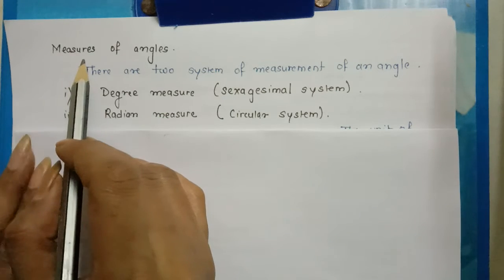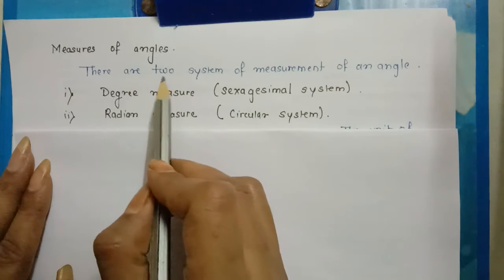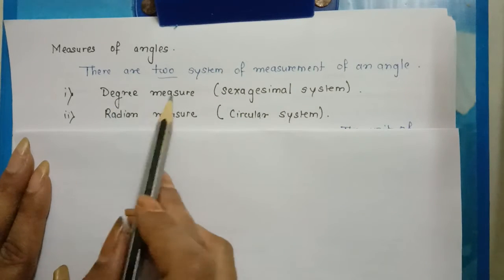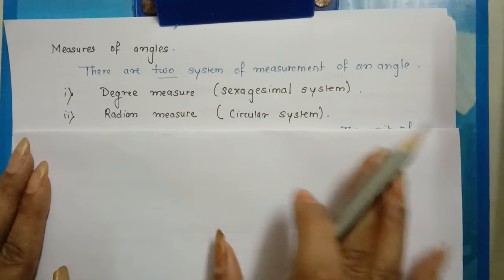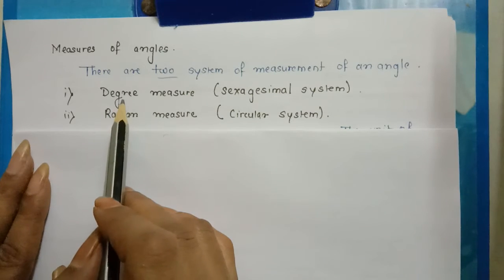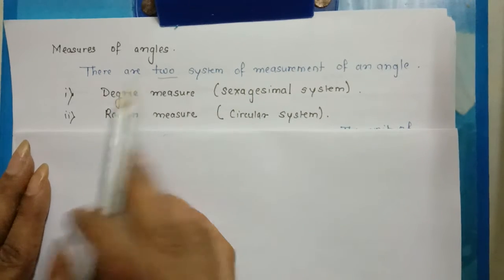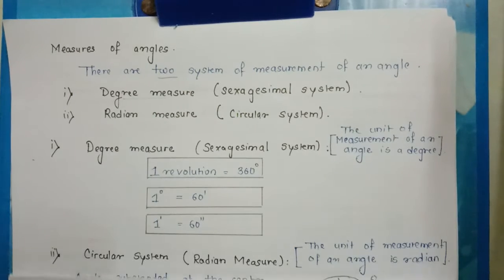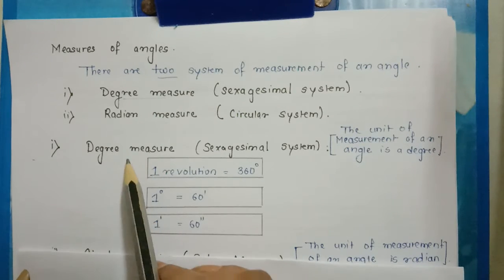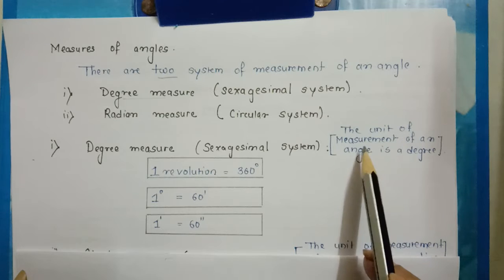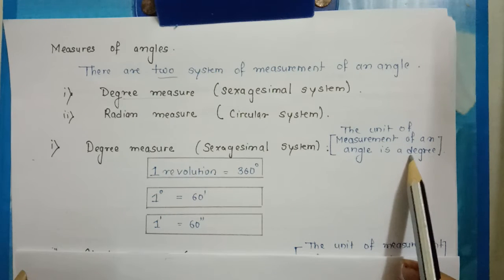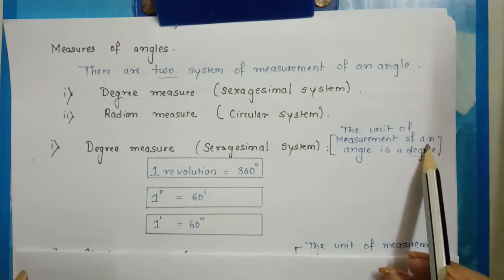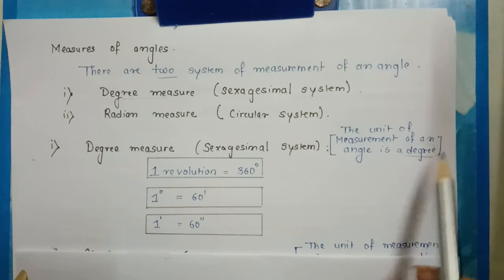Now let's see measures of angle. There are two systems of measurement of an angle. The first one is degree measure and the second one is radian measure. So your two types of systems of measurement of an angle are degree measure and radian measure. In degree measure, the unit of measurement of an angle is a degree.